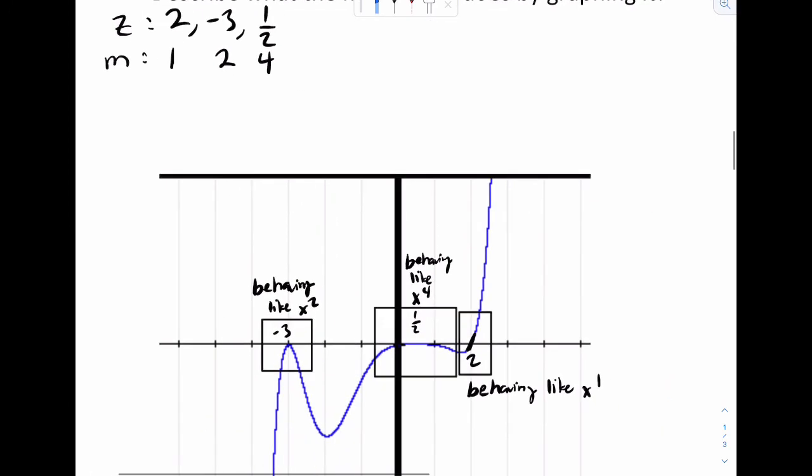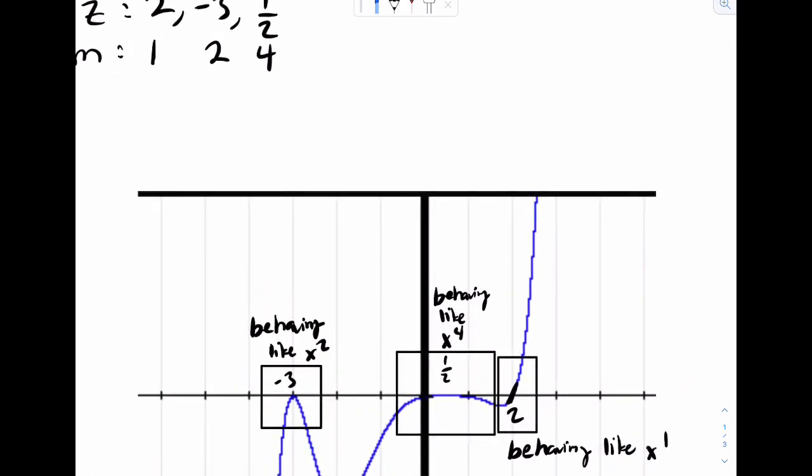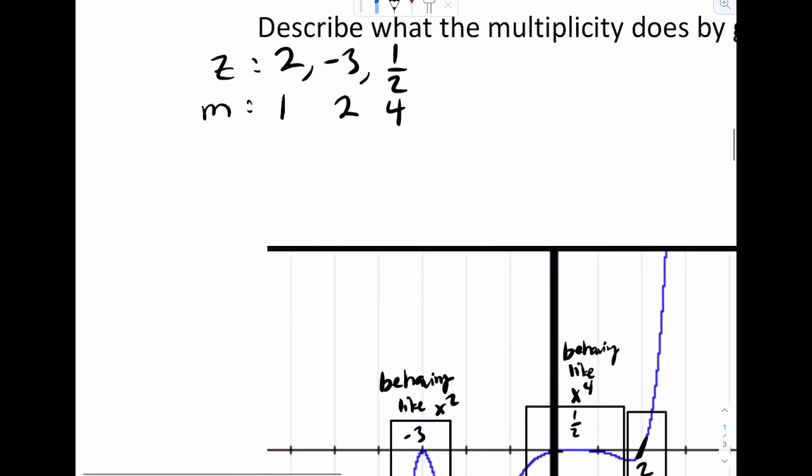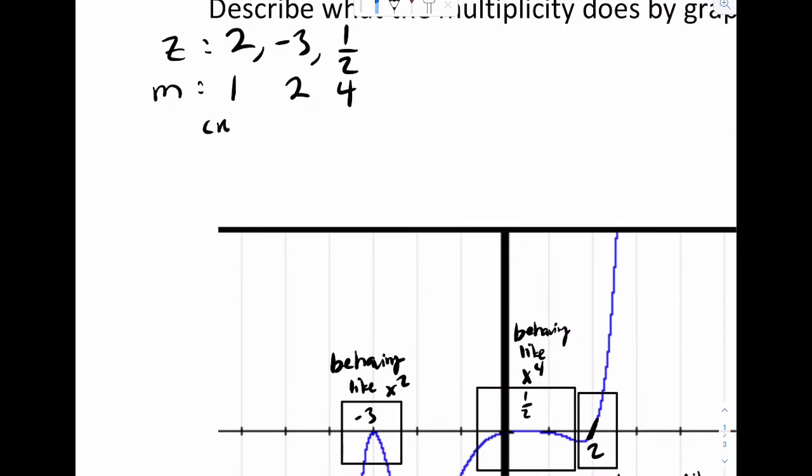So for you guys, the best thing to understand is going to be these two words, cross and touch. So at two, I can see it cross. So put a cross right there. And negative three, it touched it. And same thing at one-half. It just touched it.